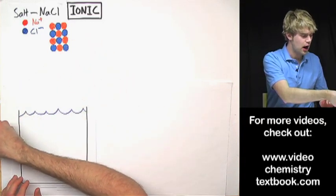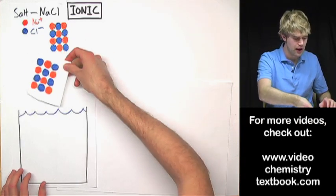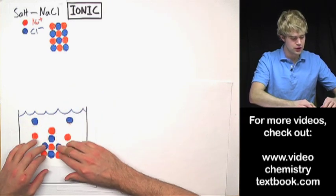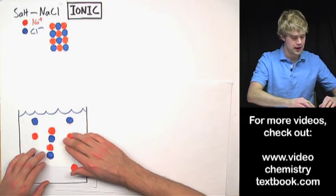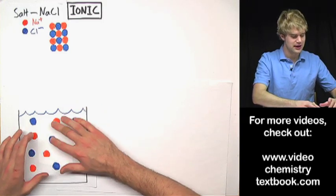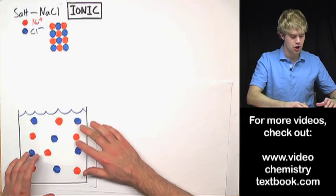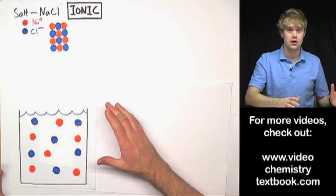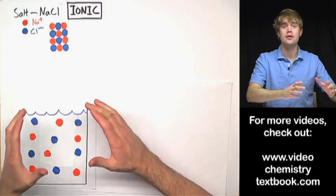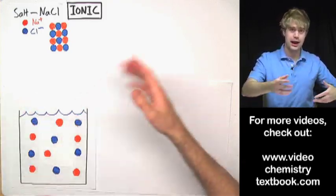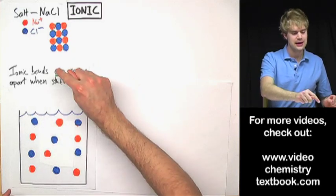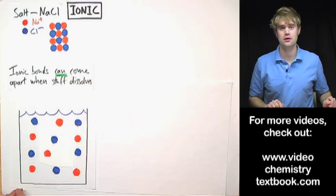So if we took a grain of salt and we dissolved it in water, this is what we'd see. The sodium and chloride that make up the grain of salt would come apart like this and we would get individual atoms floating around in the water. So the bonds that held these atoms together, the ionic bonds, were able to come apart and let the atoms float around so that we can say ionic bonds can come apart when stuff dissolves.